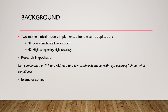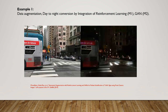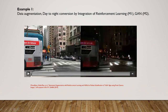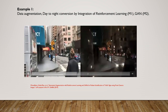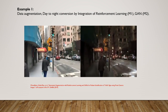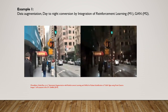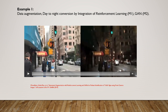Let me show you examples from published works, with code bases linked in the description. The first example is day-to-night data augmentation — an automated style transfer that generates nighttime images while conserving bounding box information around stop signs. We integrated this with reinforcement learning: the style transfer had higher computational complexity as M2, and reinforcement learning was M1. By combining them, we achieved higher accuracy for classifying nighttime traffic signs.